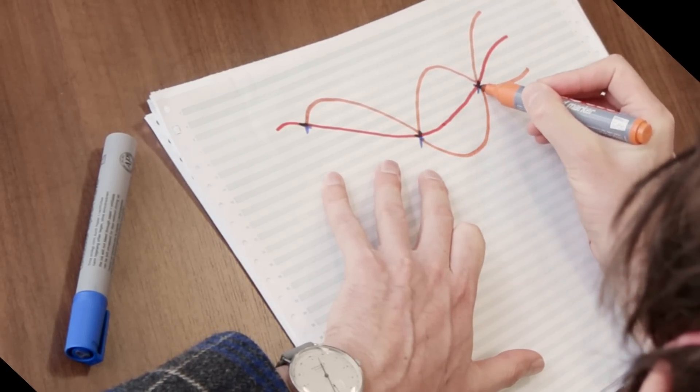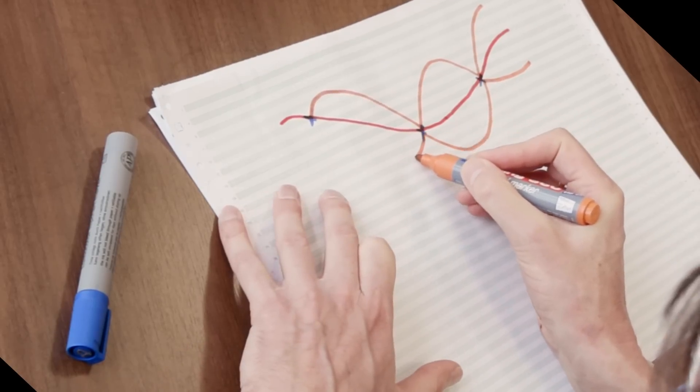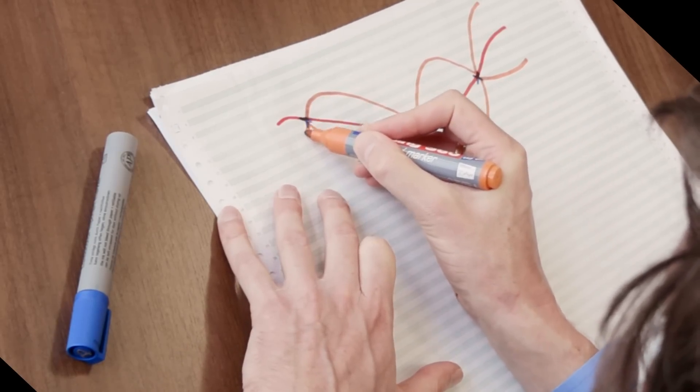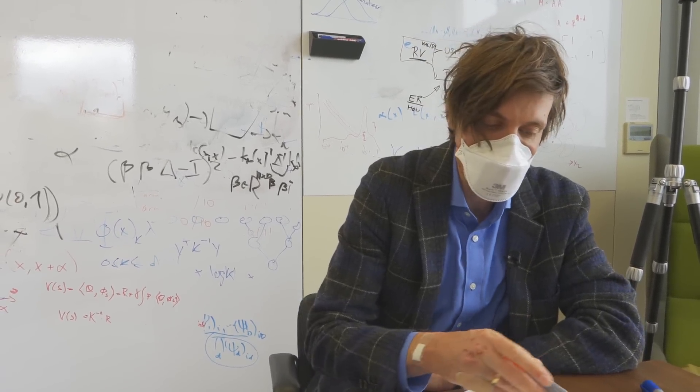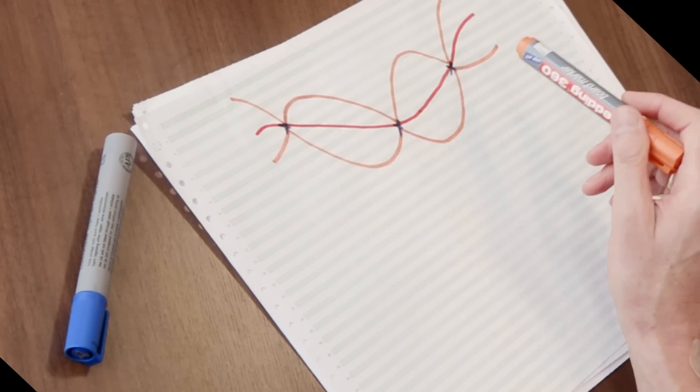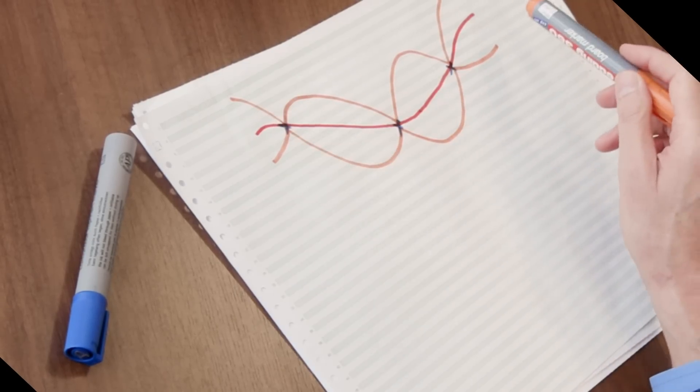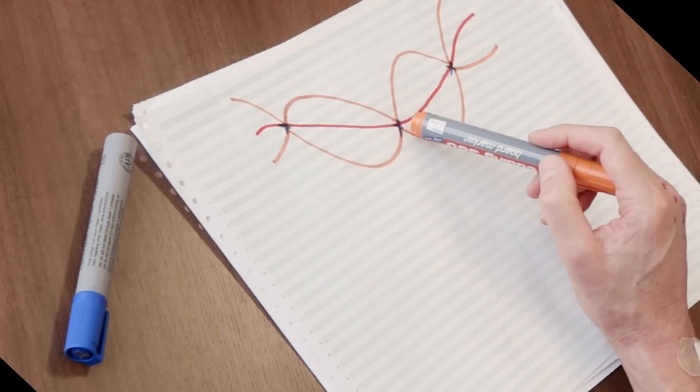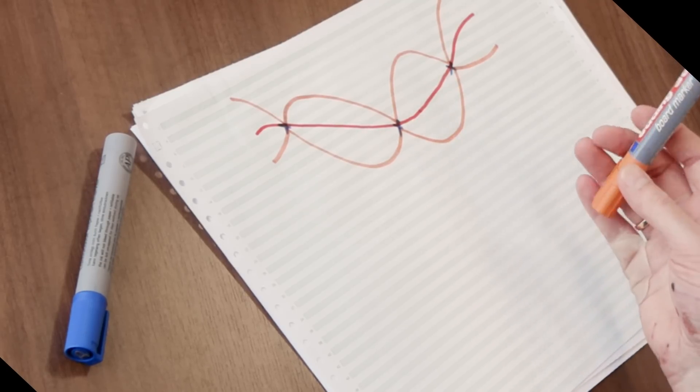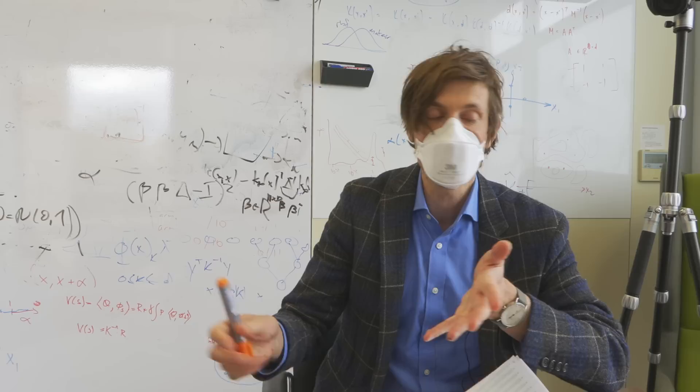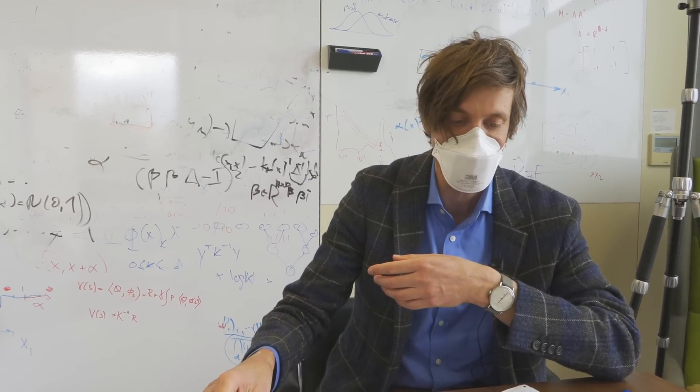We like to call these plots sausage plots. So the further away or further between the dots you are, the more the probability varies. Exactly. What we see here is that we're very confident in what this curve is close to where we've got observations, close to the blue crosses.